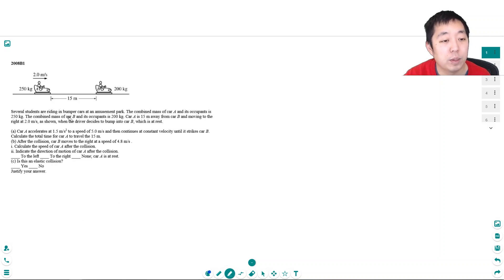Okay, so let's take a look here. Several students are riding bumper cars at an amusement park. The combined mass of car A and its occupants is 250 kilograms. The combined mass of car B and its occupants is 200 kilograms. Car A is 15 meters away from car B and moving to the right at 2 meters per second when the driver decides to bump into car B, which is at rest.